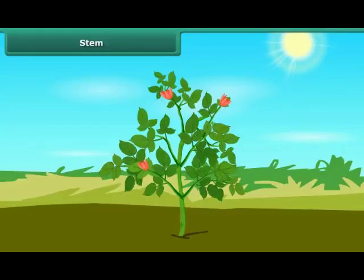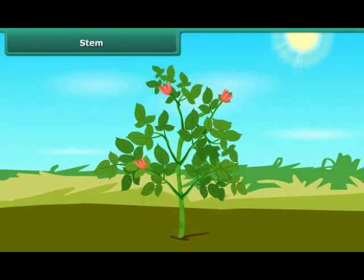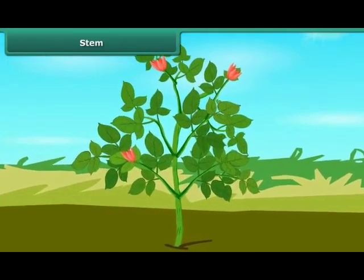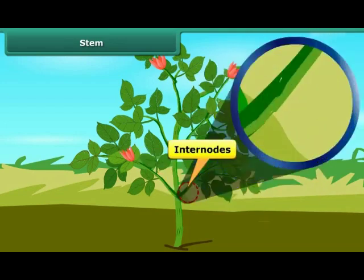The other important part of the plant body is the stem. The stem forms the main axis of the plant body, which grows towards light and away from gravity. It holds the plant body upright, bears leaves, flowers, and fruits, and exposes them to sunlight and air. The stem is divided into nodes and internodes.